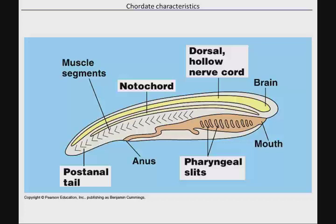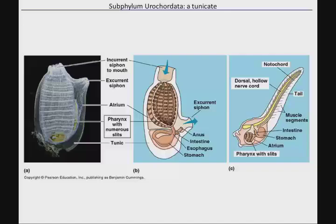In addition, we have a post-anal tail — a tail that is posterior to the anus. That's not extensive in humans; we have a tailbone, but not a true tail. Most of the chordates we're going to look at are actually vertebrates. There are some that aren't — a tunicate, or sea squirt, is an example of a chordate that doesn't have a backbone and is an invertebrate.